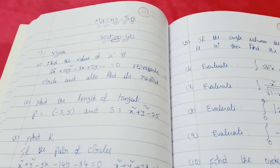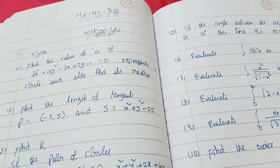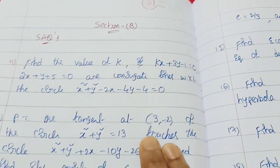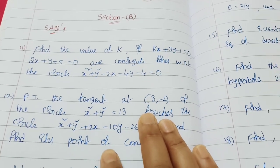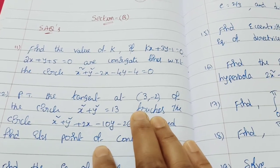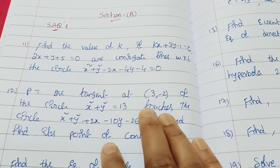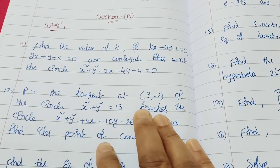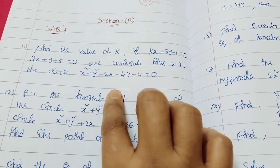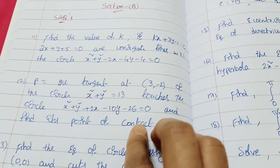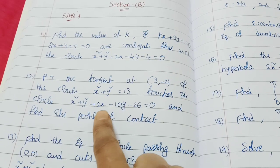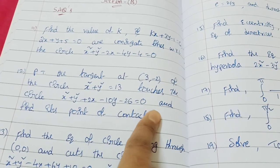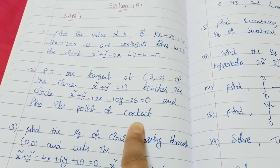Now session B. Find the value of k: kx + 3y - 1 = 0 and the second line are conjugate lines with respect to the circle. Also prove that the tangent touches the circle and find the point of contact.